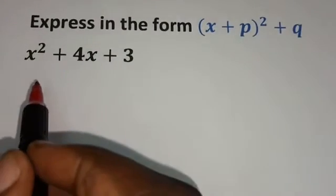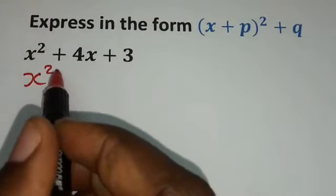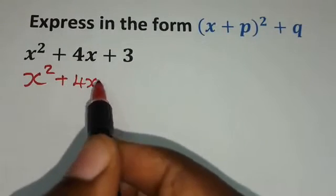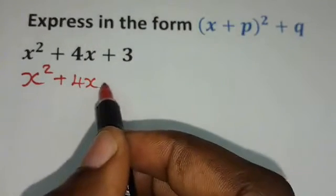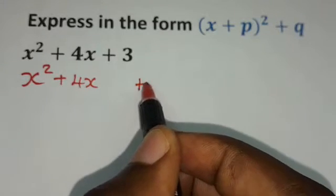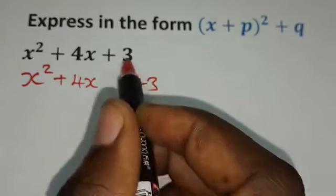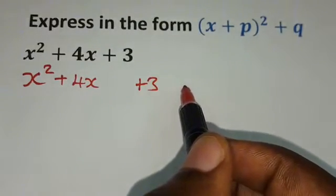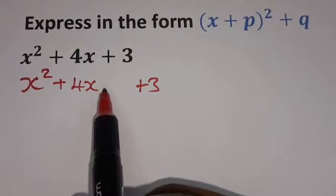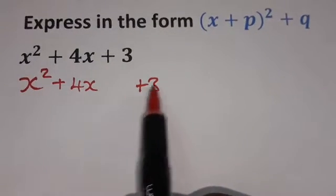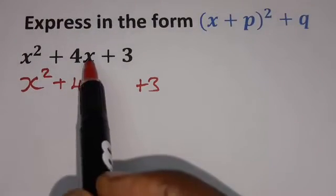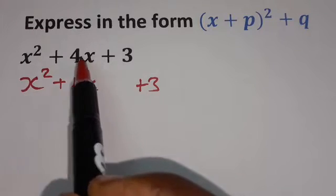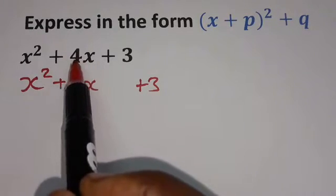So we are going to have x squared plus 4x. Then let's leave a space here, then plus 3. And let's leave a space on the right. So what are we going to put on these spaces that we've left? We are going to look for the coefficient of x. In this case, it's a 4.